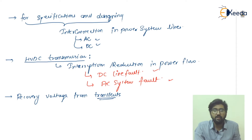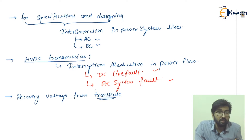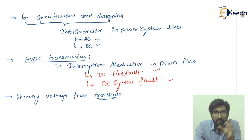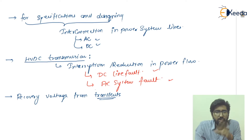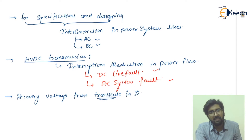Regarding transients — the power system contains a large number of inductors and capacitors. Due to this LC circuit, oscillations can be seen, and these cause transients. Transients are actually high-frequency transients. In the circuit breaker there is arc and arc interruption, and you have already seen terms like recovery voltage and restriking voltage — these are transient-related terms. So the recovery voltage from transients in a DC line fault should be fast.